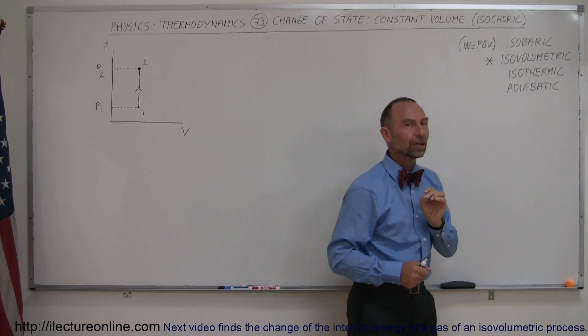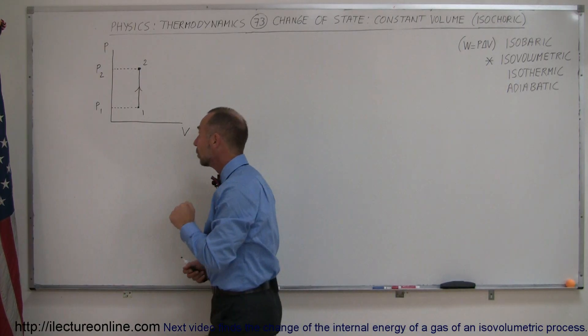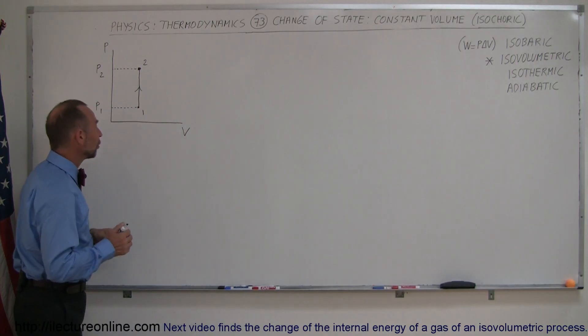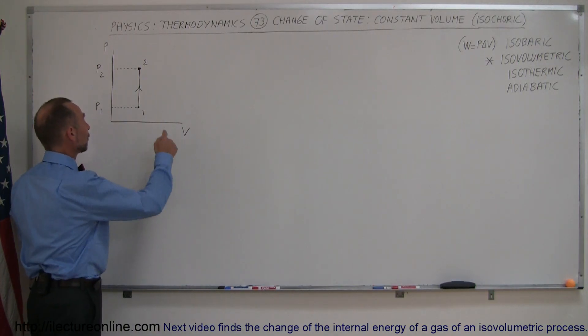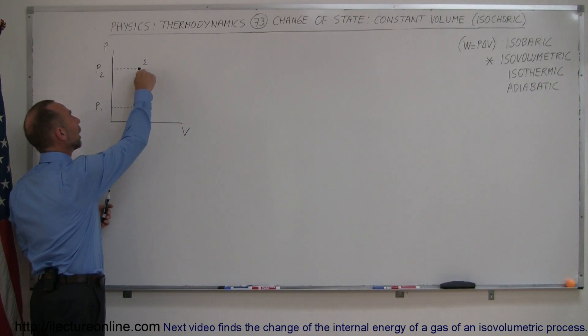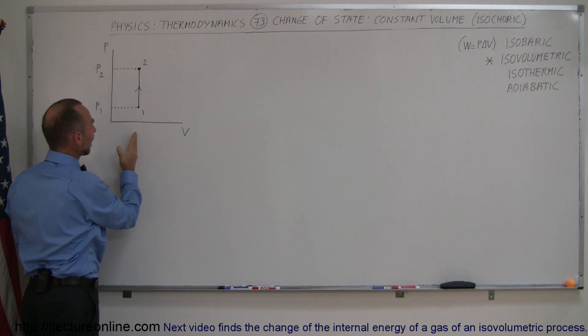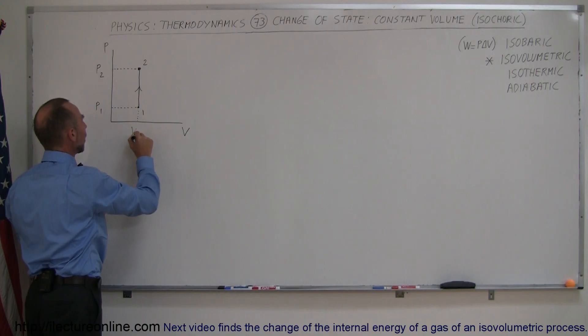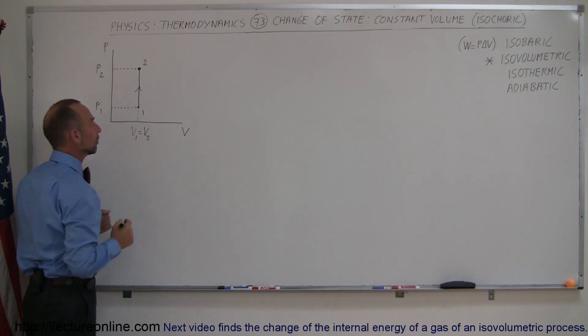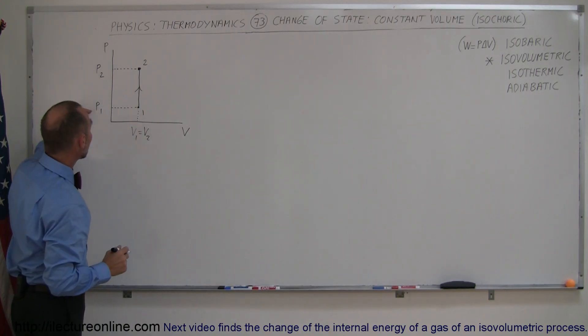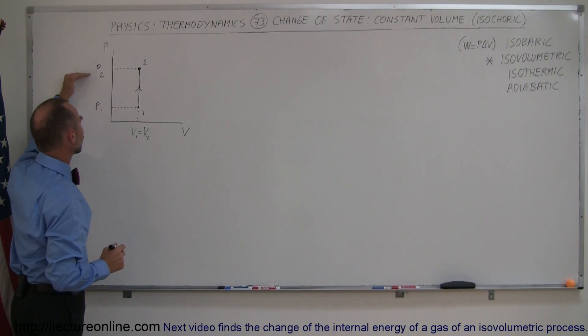For an isovolumetric process, it's something different. Take a look here on the PV diagram, and notice that it's a process where we go from one state of the gas to another state of the gas. Notice that in this case, the volume doesn't change. So we can say that V1 equals V2. It's a constant, it doesn't change. And the pressure does change from pressure 1 to pressure 2.